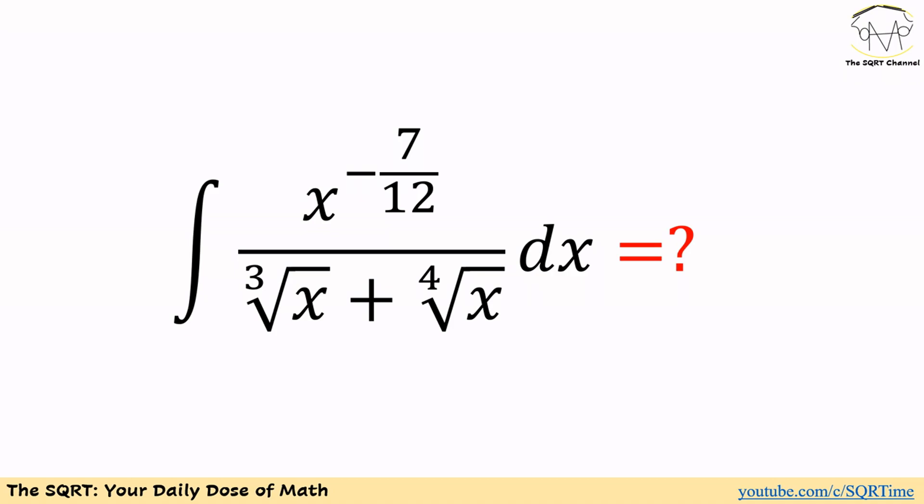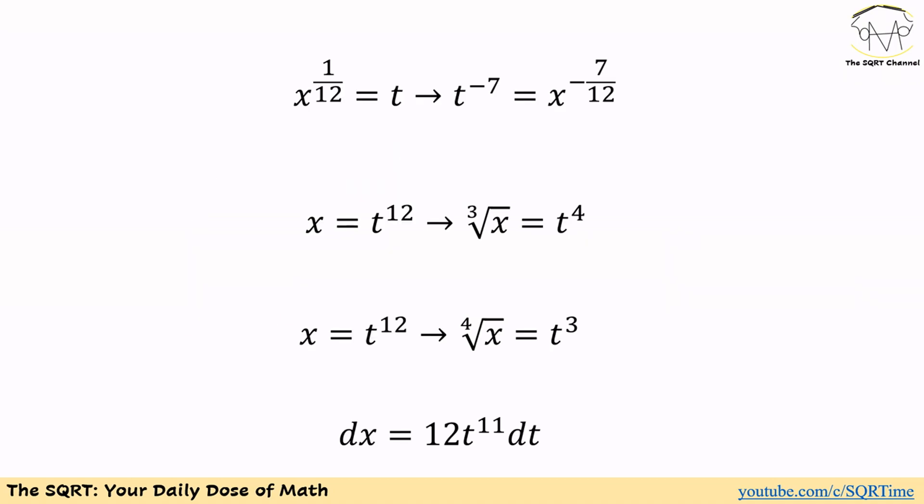Now let's focus on the second problem. We are going to start by substituting t equals x to the power of 1 over 12. Then t to the power of negative 7 equals x to the power of negative 7 over 12, x equals t^12, the third root of x equals t^4, the fourth root of x equals t^3, and dx equals 12 t^11 dt.